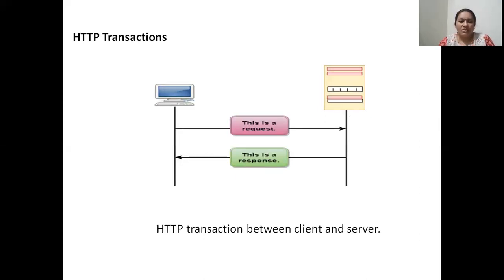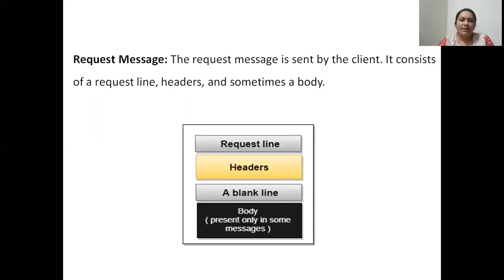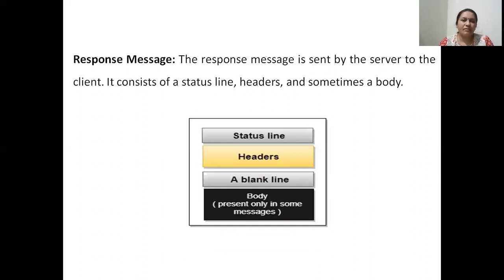Coming to HTTP transactions: the HTTP transaction between client and server involves request and response. The client will raise a request to the server and the HTTP server will reply with a response. There are only two kinds of messages in HTTP: request message and response message. The request message is sent by the client and contains a request line, header, and sometimes a body — body is optional and will be used only if required. The request line and header provide all the information regarding the website currently required by the client. The response message is sent by the server to the client and consists of a status line, headers, and sometimes a body.